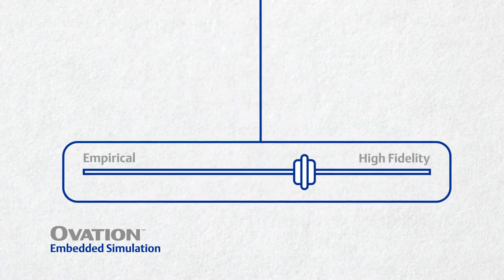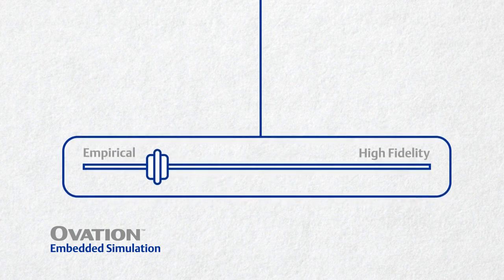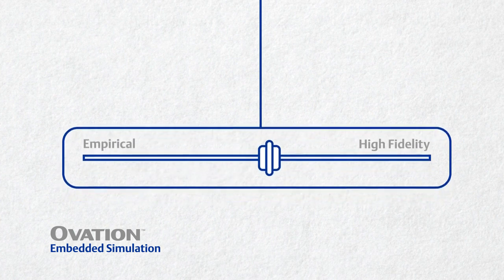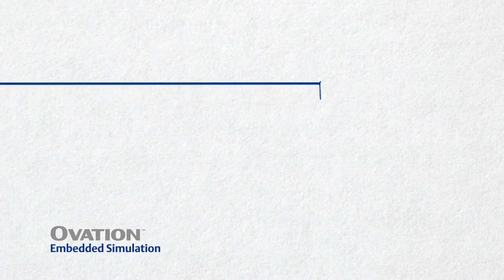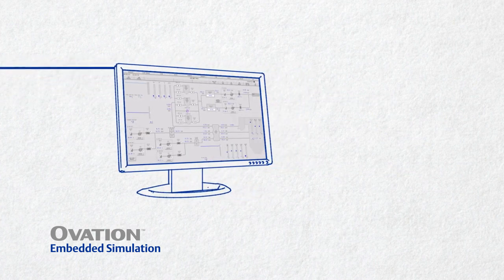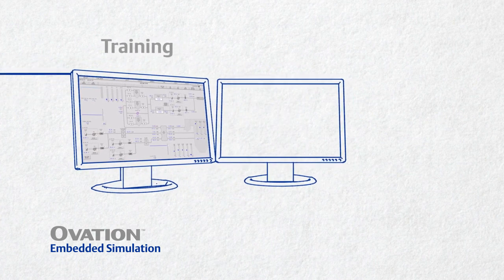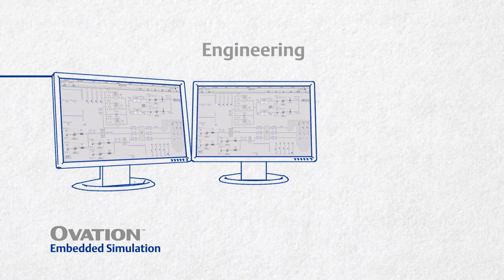Ovation Embedded Simulation provides the flexibility to mix model fidelities to meet your budget, schedule requirements, and investment priorities. Plant personnel use the same displays whether they're training on the simulator, engineering and managing the models, or operating the control system.